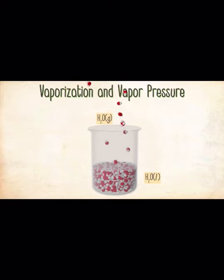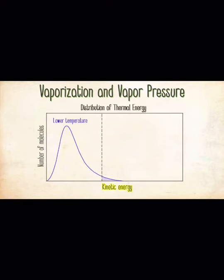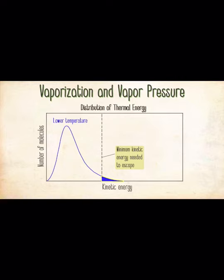You can better understand this by examining the distribution of thermal energy among molecules. This graph shows the number of molecules as a function of kinetic energy at a fixed temperature. Some molecules have a low amount of kinetic energy, and some have a high amount. The dotted line shows the minimum kinetic energy required for a molecule to escape the liquid and enter the gas — the area under that part of the curve is proportional to the number of molecules that have enough energy to vaporize. At a higher temperature, the curve shifts to the right, and the number of molecules with enough energy to vaporize dramatically increases, explaining why vaporization rates are so highly sensitive to temperature.